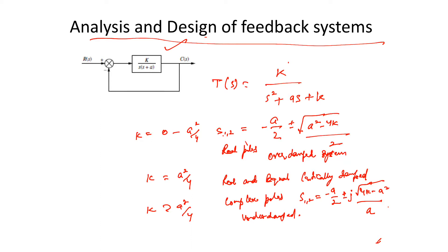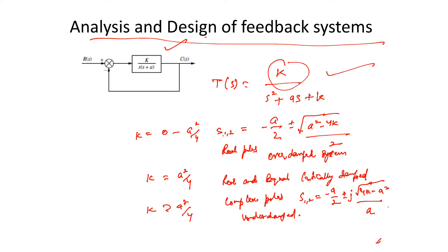In this case G(s) equals K and H(s) equals 1, giving us the closed-loop transfer function. K models the amplifier gain — that is the ratio of output voltage to input voltage. As the value of K varies, the pole moves through the three ranges of operation of a second order system.